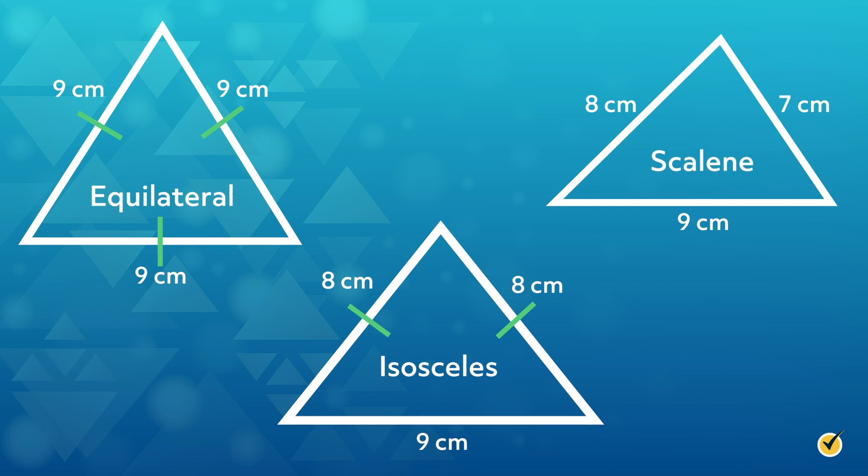While you often see these three types of triangles identified by the lengths of their sides, they can also be categorized by their angles. It works exactly the same way. When all the angles are the same, 60 degrees, it's called an equilateral triangle.